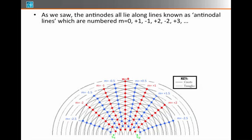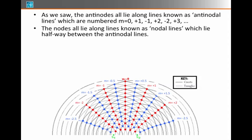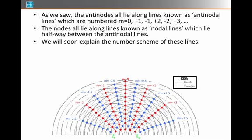There's a series of antinodes all along the line separating the two point sources, numbered as the central antinodal line where m equals zero. These also occur off to the side at m equals minus one or m equals plus one at a certain angle, or further at m equals two or m equals minus two. The nodes lie along lines in between any two antinodal lines, and are sometimes numbered with a half-integer: m equals plus a half, m equals minus a half, m equals one and a half, and so on.